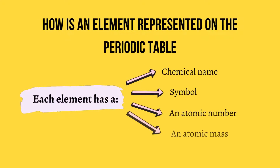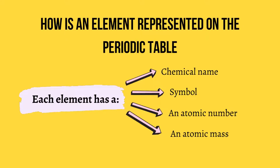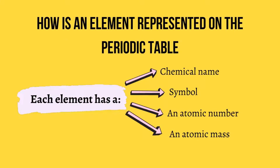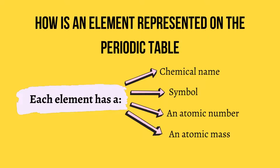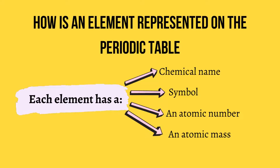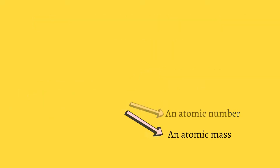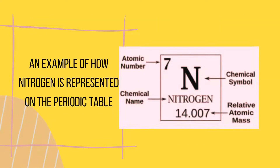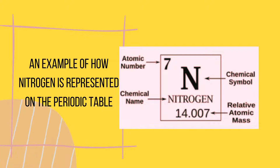On the periodic table, each element has a chemical name, symbol, an atomic number and an atomic mass. Here is an example of how nitrogen is represented on the periodic table.